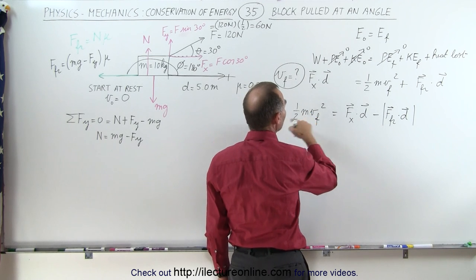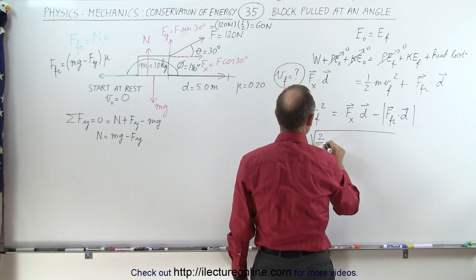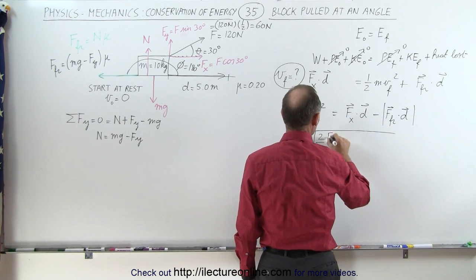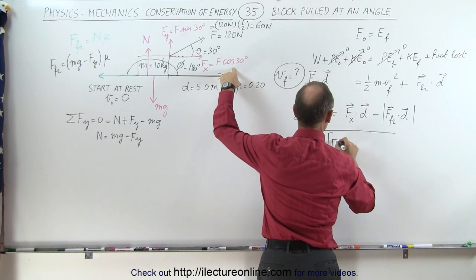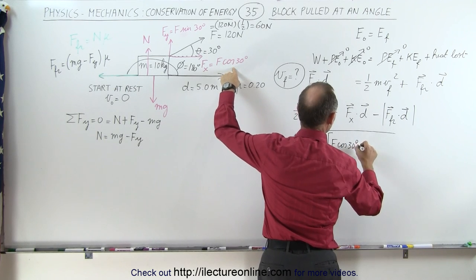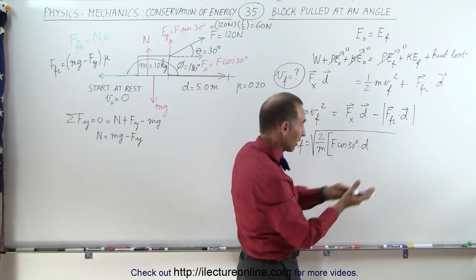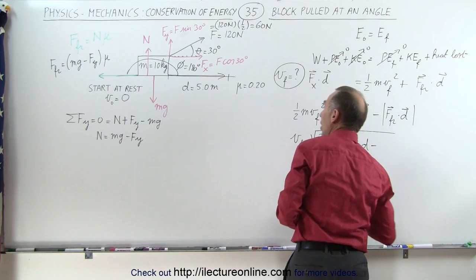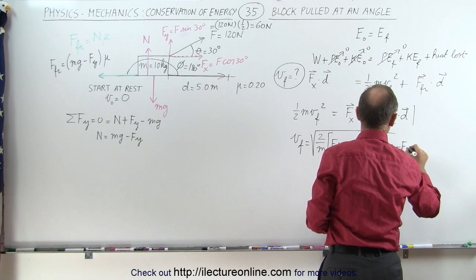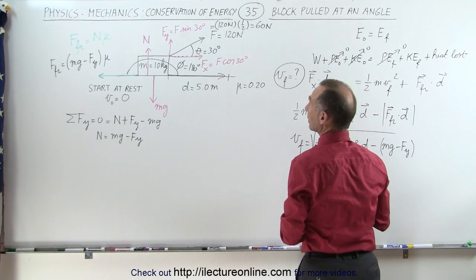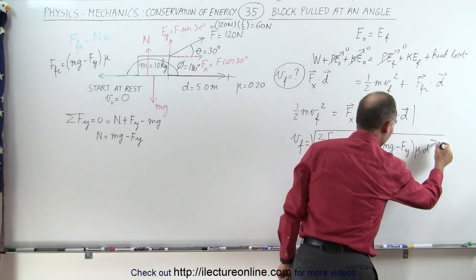Multiplying both sides by 2 and dividing by m, v_final is equal to the square root of 2 over m times: the force F times cosine of 30 degrees times distance d times cosine of 0 degrees, minus the heat loss due to friction, which is mg minus the force in the y direction, times mu, times d.